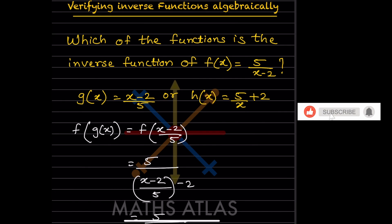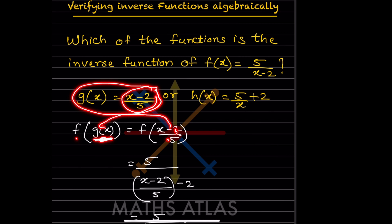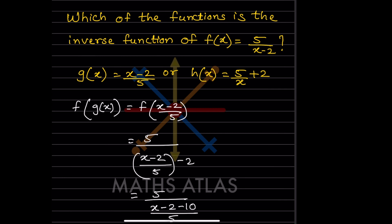Let's start by computing f(g(x)). Whenever you have f(g(x)), you look at g(x), whose value is given as (x-2)/5. In place of x in f(x), you are going to write (x-2)/5. So you plug this value of g(x) into the main function f(x).